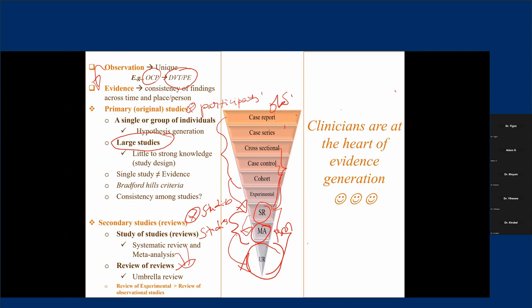Public health professionals or others engaged in research as a full-time job do all this work. But whenever you treat patients and take good history and write that history, you're contributing to clinical research — even if you're not directly involved in the evidence generation process. Most of our research, perhaps 70-80%, is based on record reviews. We usually do retrospective studies, and a clinician who writes very good history is contributing to evidence generation because that's where we get our data when we conduct cohort, case-control, or cross-sectional studies.